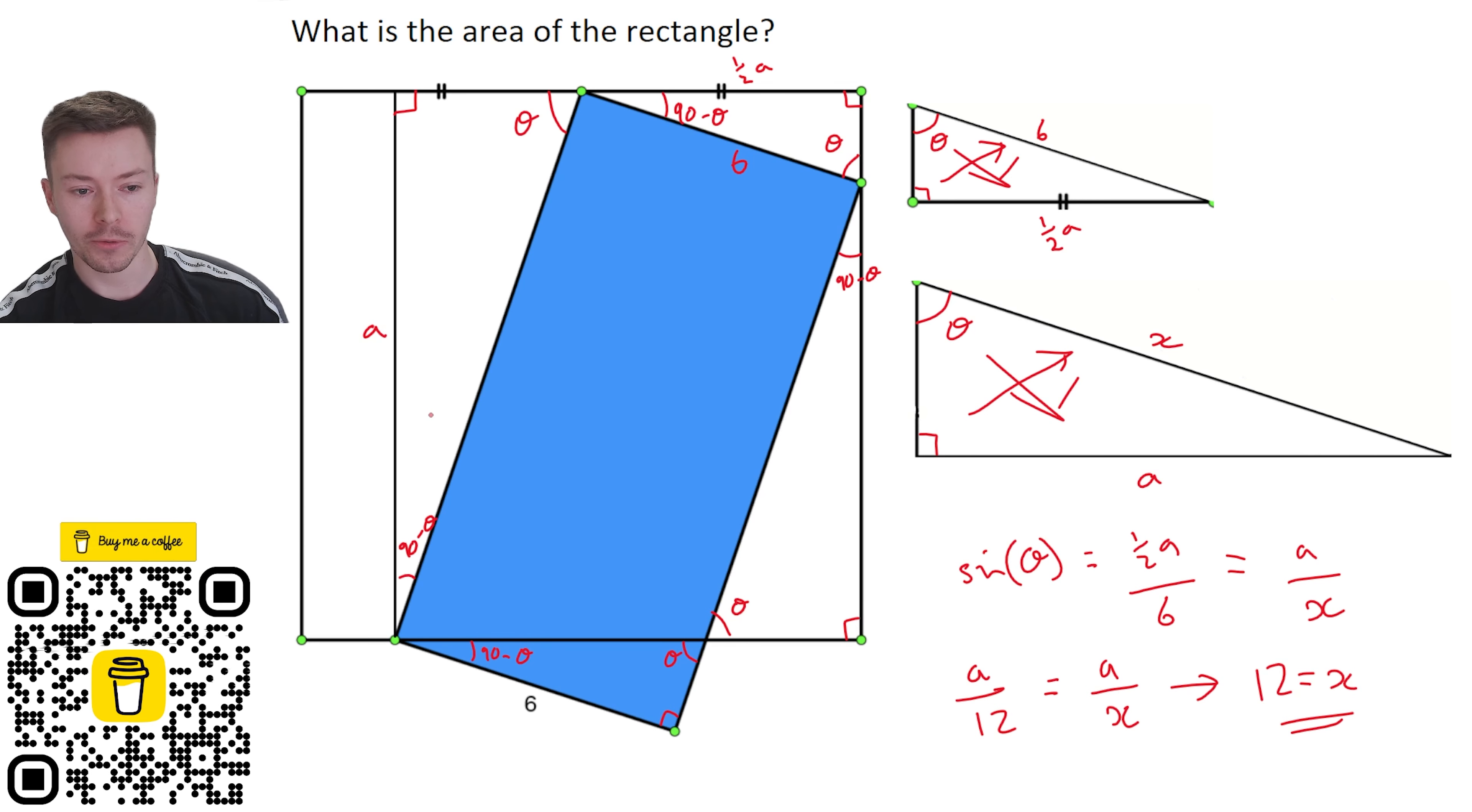So that means x was the height of my rectangle that is equal to 12. So finally to work out the area of the rectangle we do 6 times 12 which will give us 72 units squared.